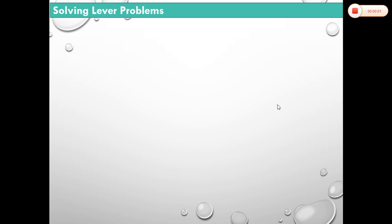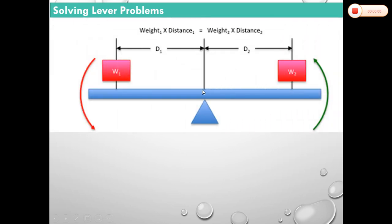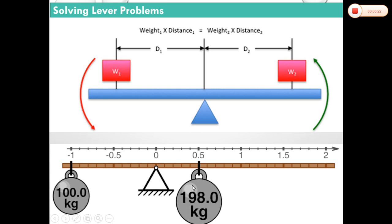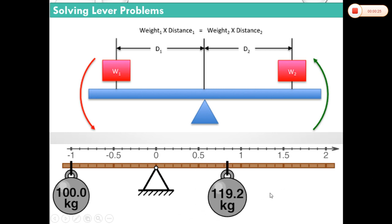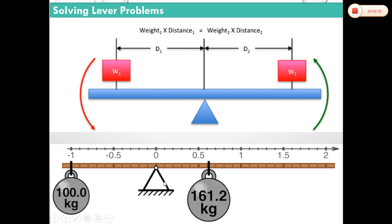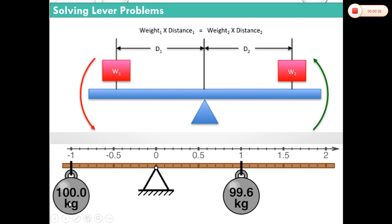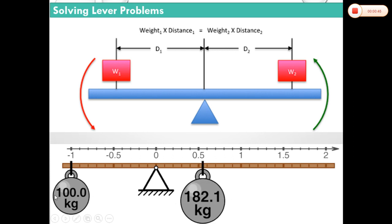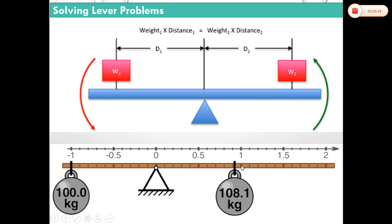Let's proceed with lever problems. A lever is governed by the law that W₁ × D₁ = W₂ × D₂. Imagine a 100-kilogram weight on the left side being balanced by another weight on the right side. As the weight goes further from the fulcrum it becomes lighter, but if it is closer to the fulcrum the required weight is heavier. It is only balanced when the products of weight and distance are equal on both sides.